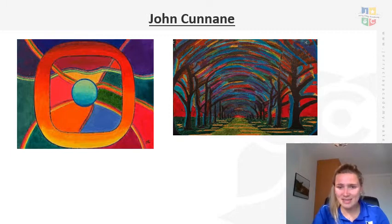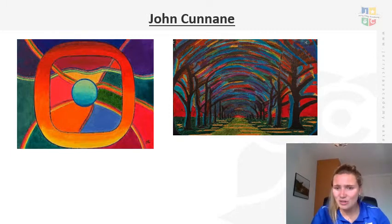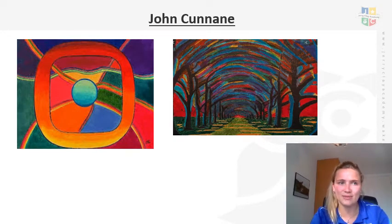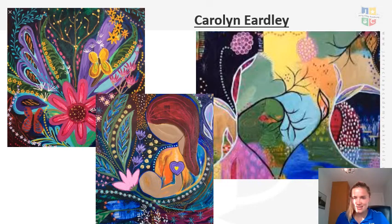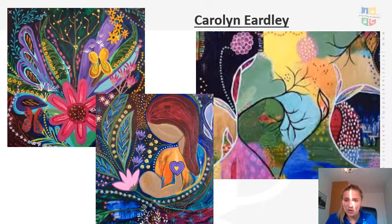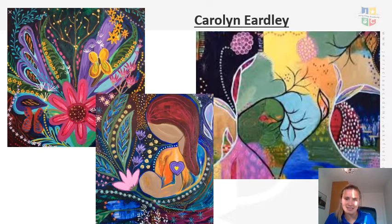I'd like you to do the same for this piece — this is John Kornane and this is his artwork. Have a look at what you can see and how it links to hope and light. How does it make you feel? Pause the video now and have a good look. The next artist we're going to look at is Carolyn Erdly. This is the work that she produces, so have a look at the pictures, pause the video and see what you can see.